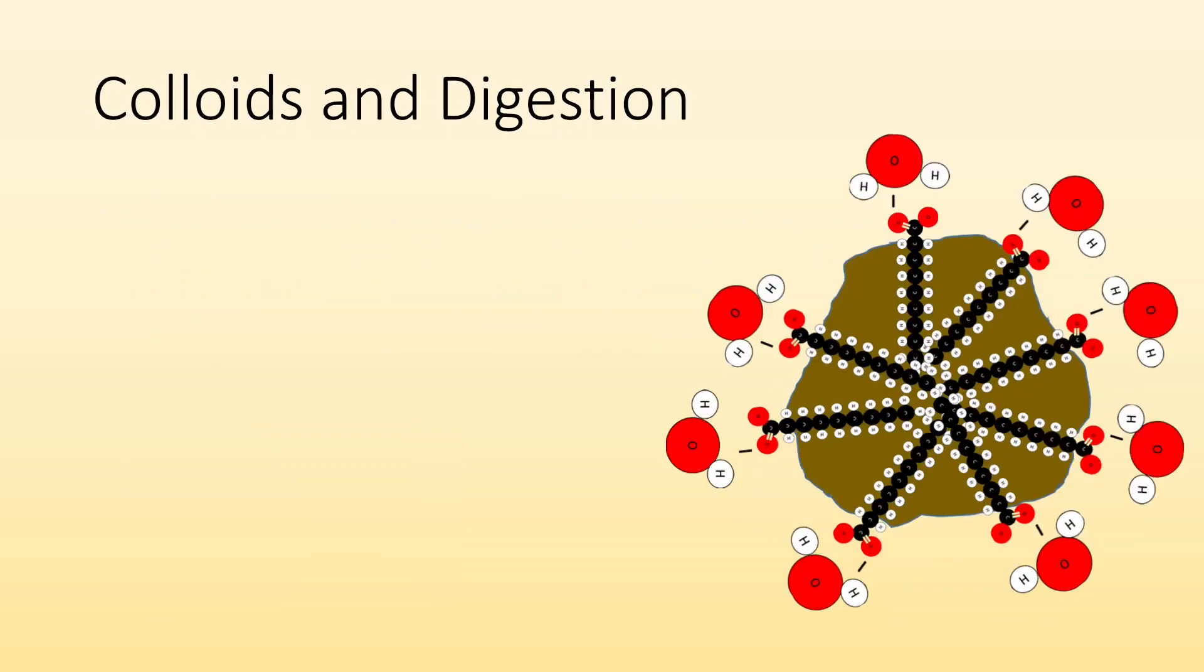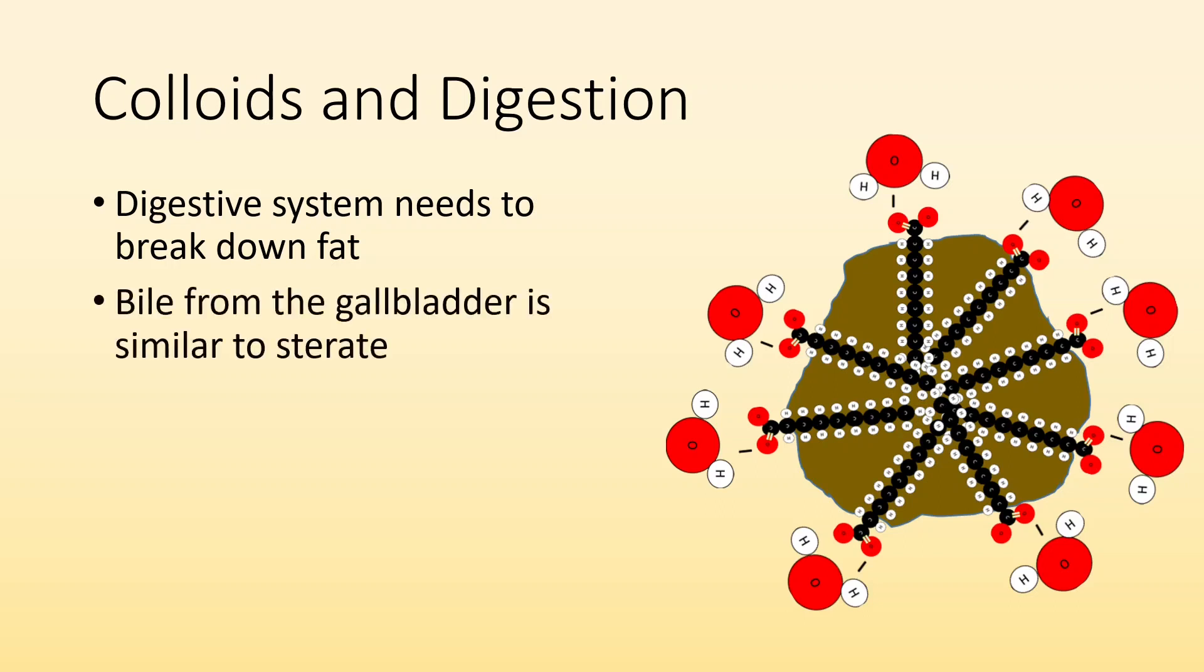So colloids and digestion. We eat fat. We need fat as a part of our diet. Maybe not a huge part of our diet, but we still need some fat in our diet. And our digestive system needs to be able to break it down. That's the job of bile from the gallbladder. So bile is going to act like stearate. If we didn't have bile and we consume the fat, the fat in our digestive system would just kind of clump together and we wouldn't be able to dissolve it and then digest it.